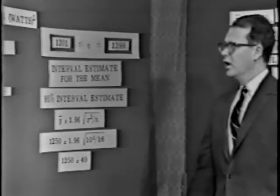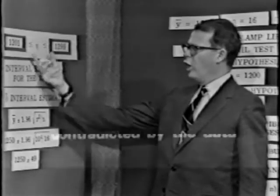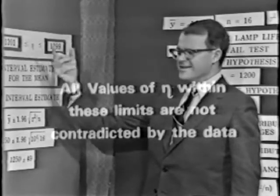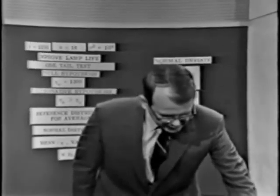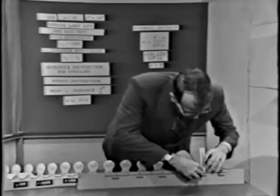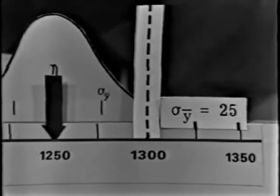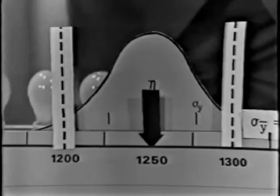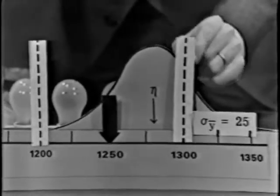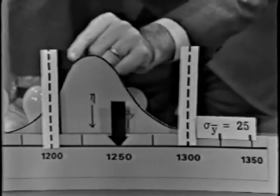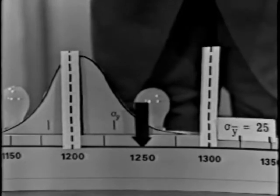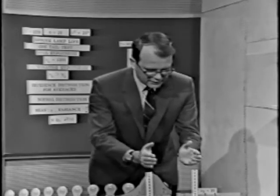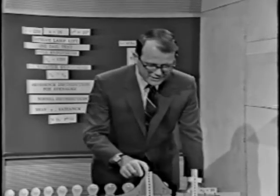My attitude towards these limits is the following: all values of eta which fall within these limits are not contradicted by the data. This is called a 95% confidence interval statement for eta. Looking at it geometrically, one limit is up at about 1,299 and the other is down at about 1,201. My belief in eta is highest at 1,250 and slumps off from there. Beyond these limits, I find those values of eta intolerable in the light of the data.